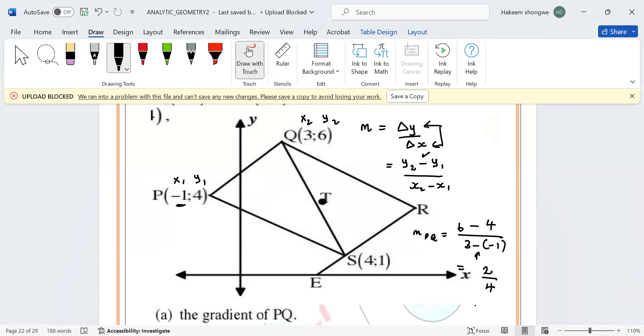Two over four is not in its simplest form. The simplest form is one over two, so the gradient of PQ is one over two.